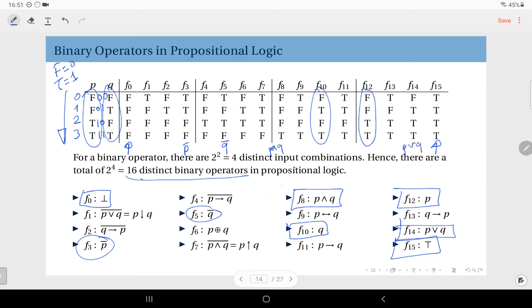And what about implications? So P implies Q is F11. And Q implies P, its converse, is F13. And we also have their negations. F4 is the negation of P implies Q. And F2 is the negation of Q implies P. And the bi-conditional is at F9. P if and only if Q. And XOR, its negation, is at F6.